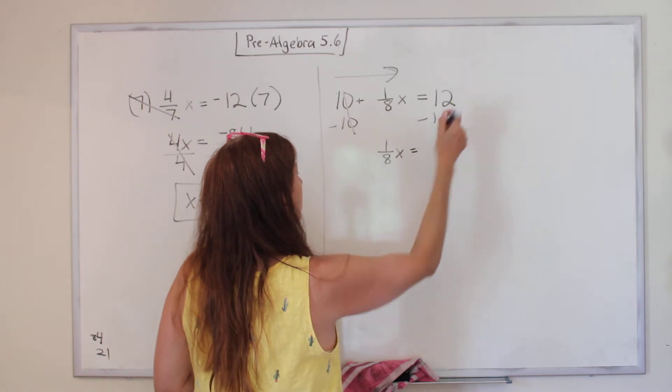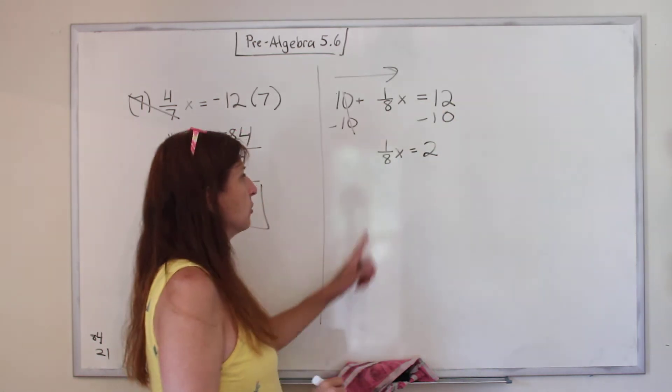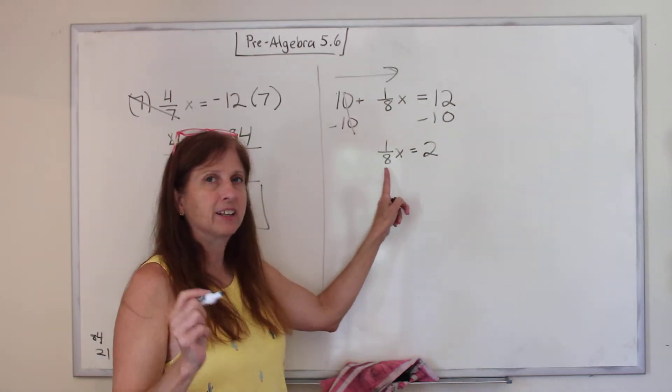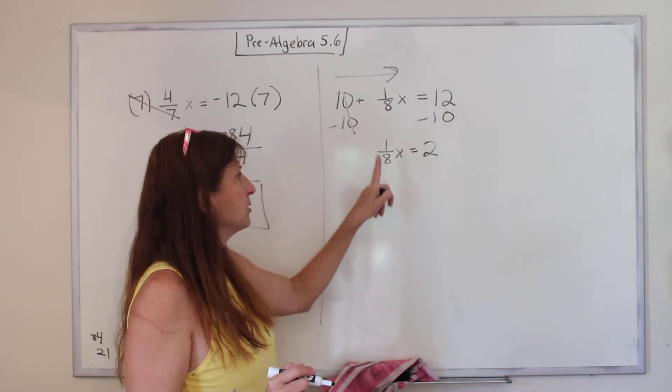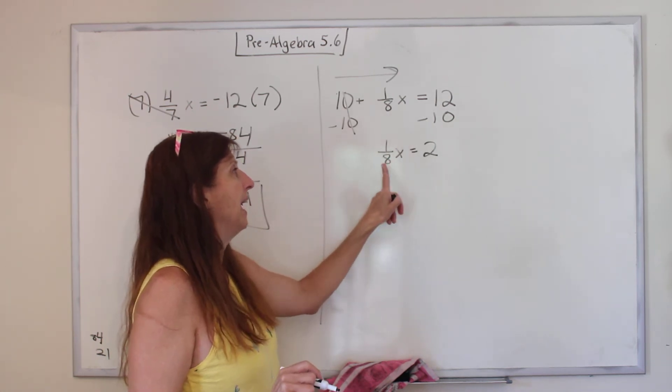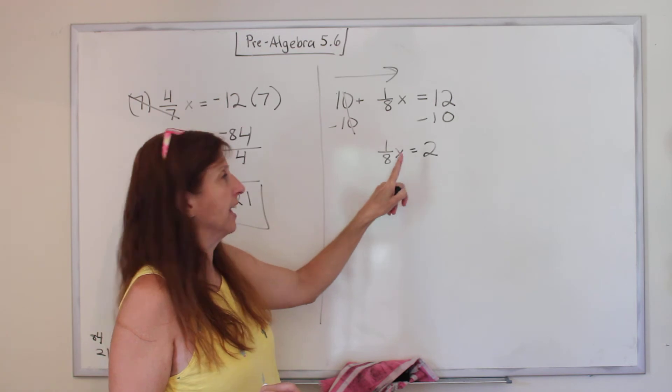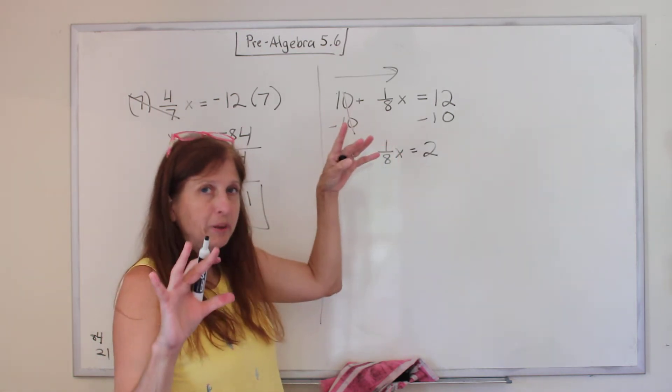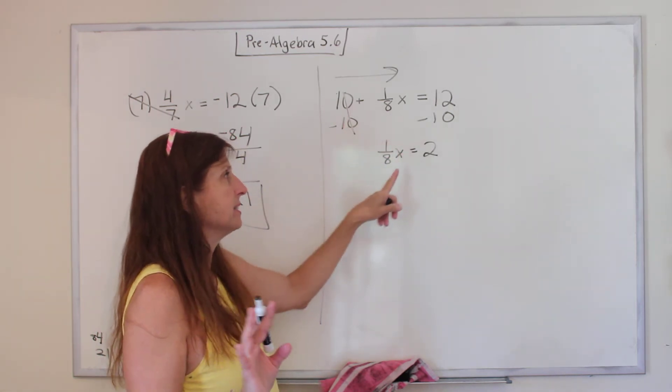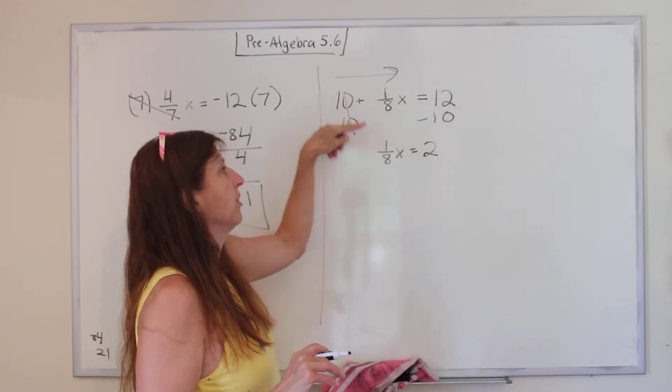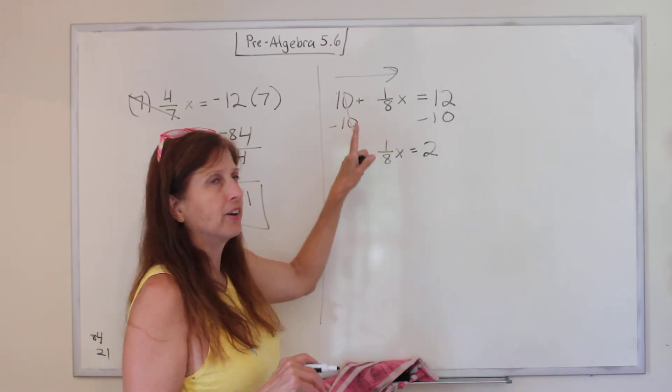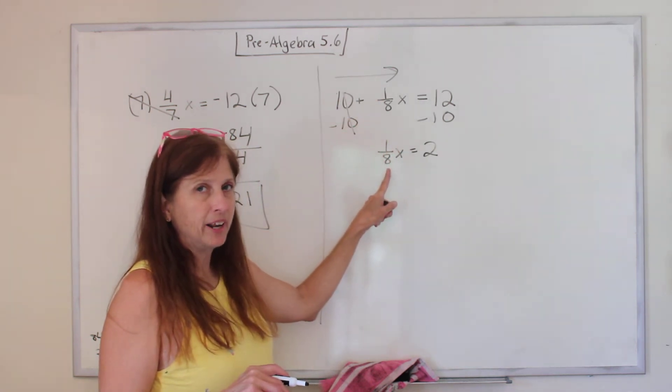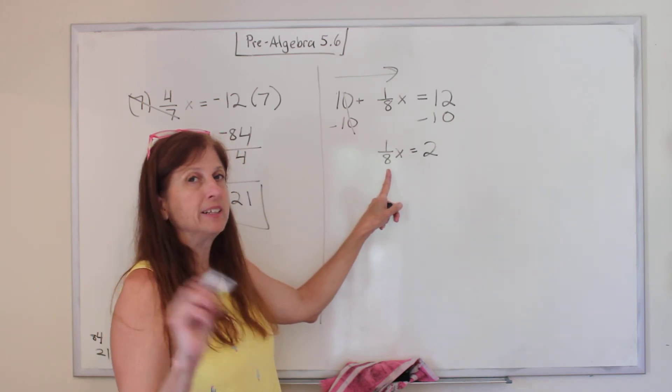One eighth x equals 12 minus 10 is 2. So remember I told you this is mathematically equivalent to x being divided by 8. x is in numerator land. It might be sitting a little bit down like it's at a split level, but it's not. It is in numerator land. The 1 is in numerator land. The 8 is in denominator land. Denominator land means divide.